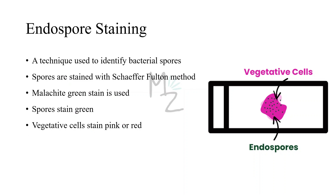Endospore staining is a differential stain — a technique used to identify bacterial spores or endospores. Both words are used interchangeably and mean the same thing. Spores are stained with the Sheffield-Fulton method. This method uses malachite green as a primary stain, which stains all the spores green, while the vegetative cells are pink due to the counter stain, safranine, that stains all the vegetative cells pink or red. As you can see, these green dots are the endospores, while the pink background is vegetative cells.